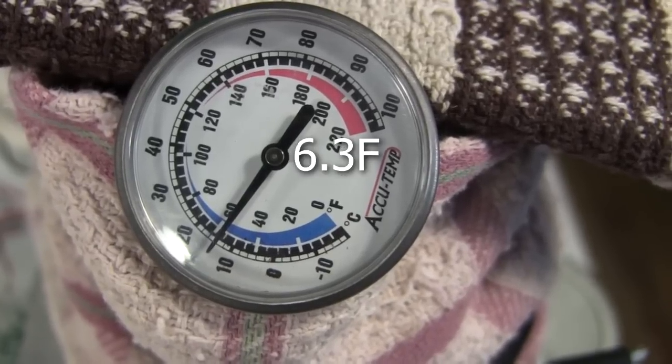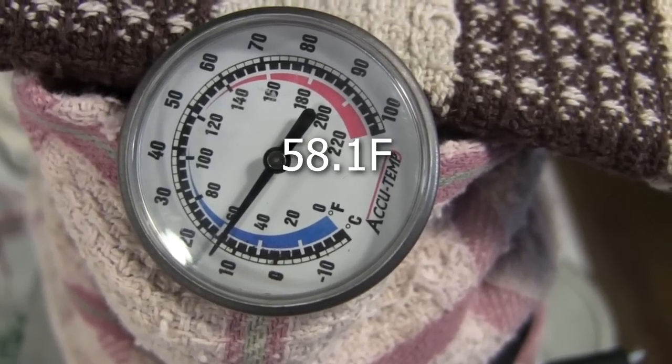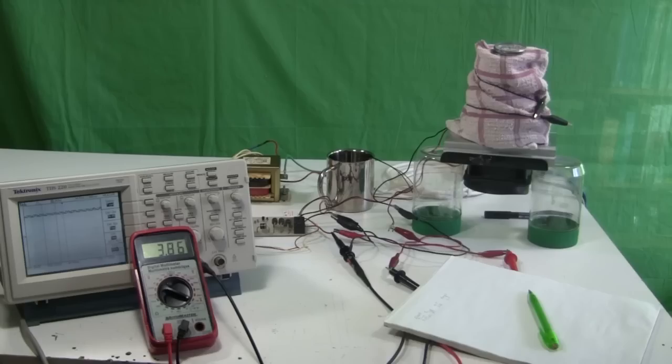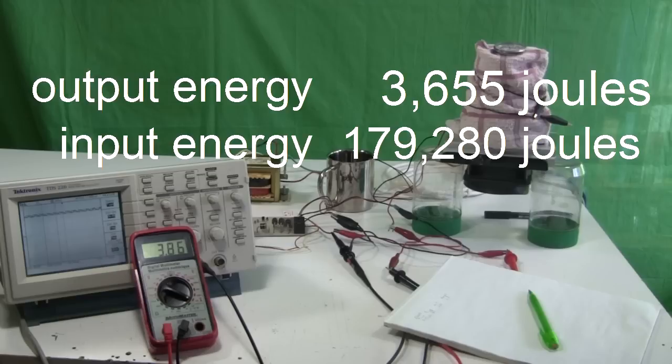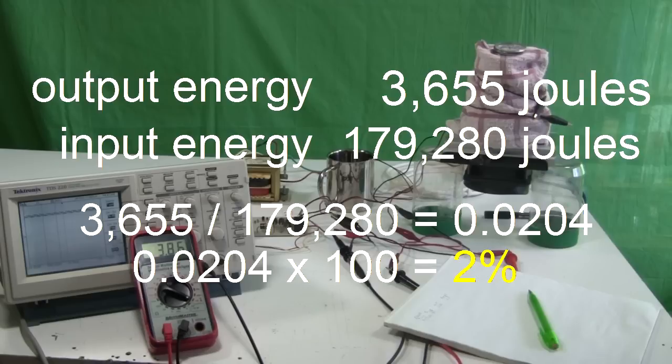After one hour, the temperature had dropped by only 4 Celsius, down to around 14 Celsius. That cooling is my output and amounts to 3,655 joules. The input energy from the electricity is 179,280 joules. That gives an efficiency of 2%. Since the Peltier modules are only around 5% efficient, the rest is losses. It's about what I'd expected.